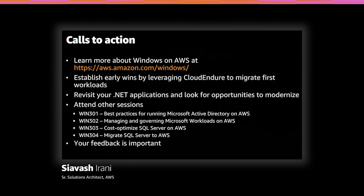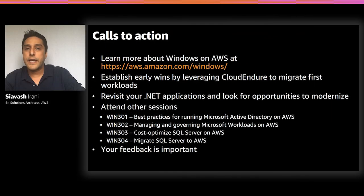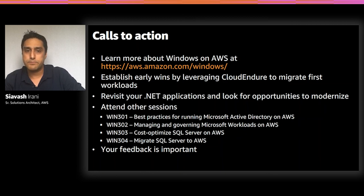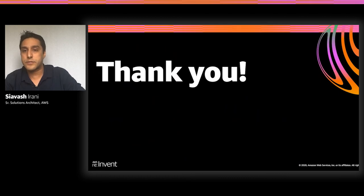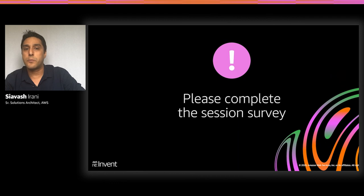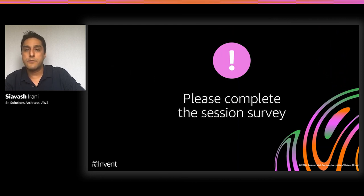To learn more about Windows on AWS, visit aws.amazon.com/windows. Look for applications that can be migrated using CloudEndure to establish early wins, and revisit your .NET applications for modernization opportunities. There are also other re:Invent sessions useful for running Microsoft workloads on AWS. Please rate this session — your feedback helps us understand what topics matter to you and how to continue improving.